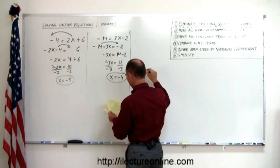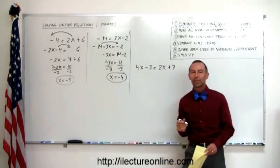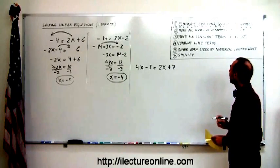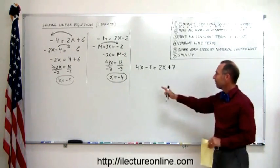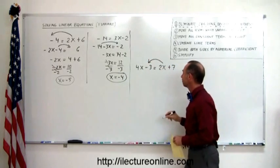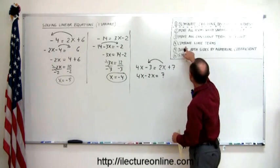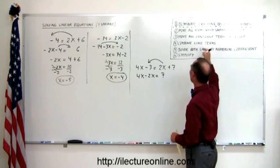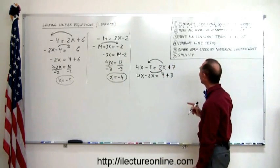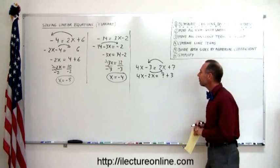Let's try another one: 4x minus 3 equals 2x plus 7. These are simple examples, but they illustrate how we handle more complex ones. Step one: we can ignore that, no fractions, decimals, or parentheses. Step two: move all terms with the variable to the left. 4x is already on the left, so it stays. The 2x is on the right side, so I move it to the left: 4x minus 2x equals. I did steps two and three at the same time — the minus 3 moves to the right, becoming plus 3. You can do that, or do it one at a time — whichever you're comfortable with — but make sure you change the sign when you cross the equal sign. The positive 2x became minus 2x; the minus 3 became a positive 3.